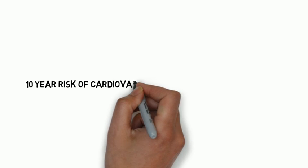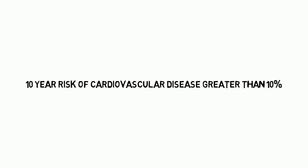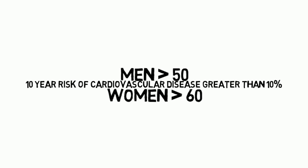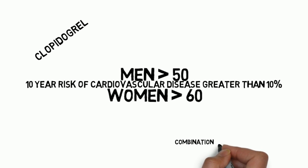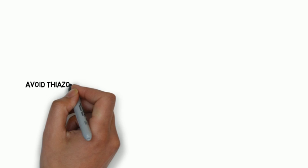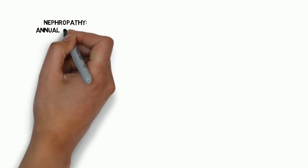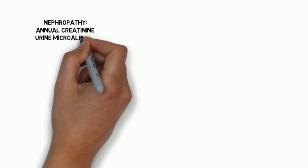Diabetic patients with a 10-year cardiovascular disease risk greater than 10% should receive aspirin — including most men over 50 and most women over 60 with at least one major risk factor. Clopidogrel can be given as an alternative for patients allergic to aspirin. Combination aspirin and clopidogrel therapy is reasonable for up to a year after an acute coronary syndrome. Thiazolidinedione therapy should be avoided in patients with symptomatic heart failure, and metformin should be avoided in unstable or hospitalized patients with heart failure. Screening for nephropathy includes annual creatinine and urine microalbumin starting in all new type 2 diabetic patients and type 1 diabetic patients who have had diabetes for 5 years.